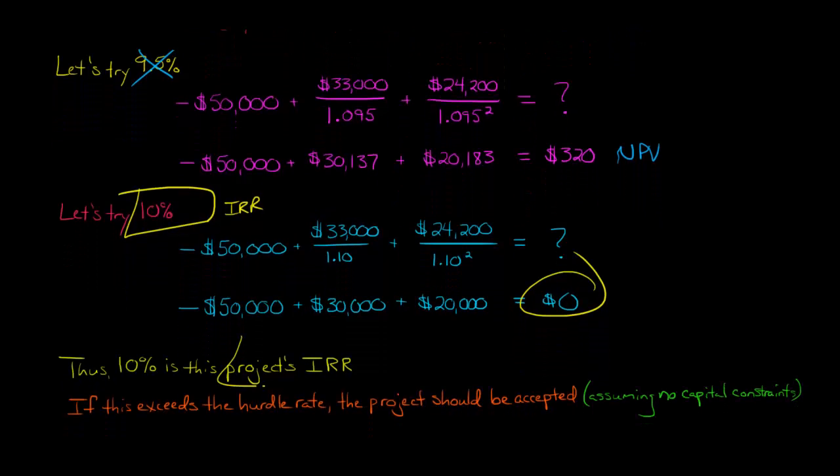So 10% is this project's internal rate of return. Now, what do we do with that? Well, we're going to look at the company's hurdle rate. So let's say the company has a hurdle rate where they say, look, we have to achieve a return of at least 8% on our projects. And so we compare them and say, well, this project has an IRR of 10%, and our hurdle rate is 8%. So we meet the required rate of return for this particular company. So then we would accept the project.